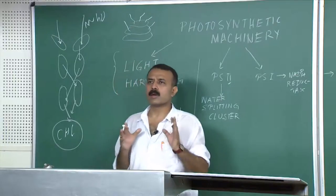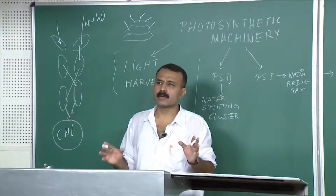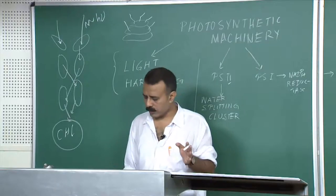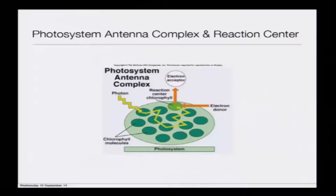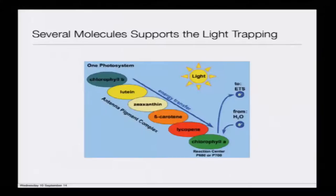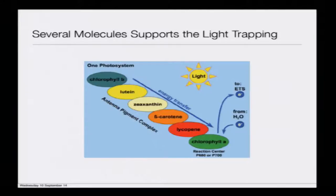There is some degree of loss, but this arrangement ensures maximum capture of sunlight. Supporting molecules for light trapping include not just chlorophyll a and chlorophyll b, but also lutein, zeaxanthin, beta-carotene, and lycopene — a series of antenna pigment complexes that help funnel the energy to their specific site.